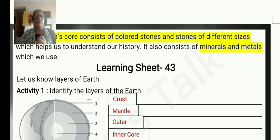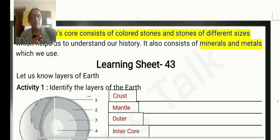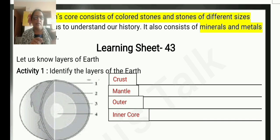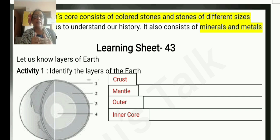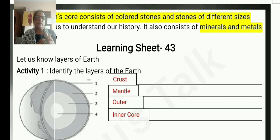Learning Sheet 43 — let us know the layers of the earth. Activity 1: Identify the layers of the earth. The first picture shows the layers of the earth. You can copy the outer layer of the earth. Below the crust is the mantle, and the next one is the core, divided into outer core and inner core.